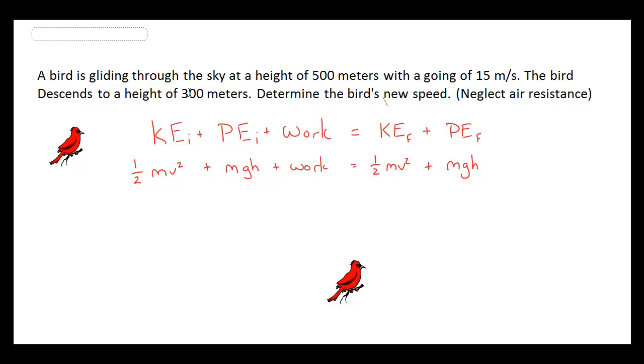What we have in our early initial conditions is that a bird is cruising through the sky at a given height and at a given velocity.